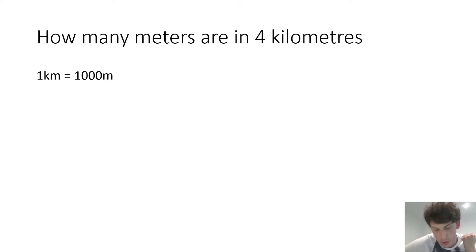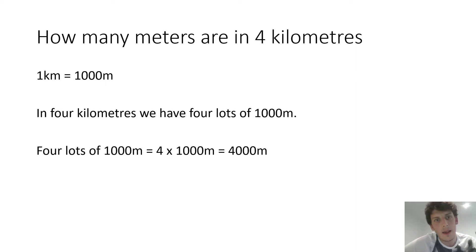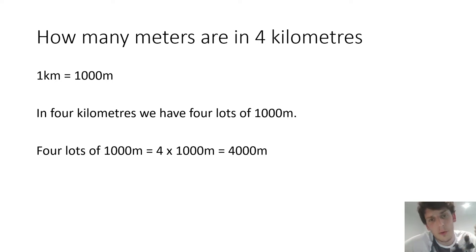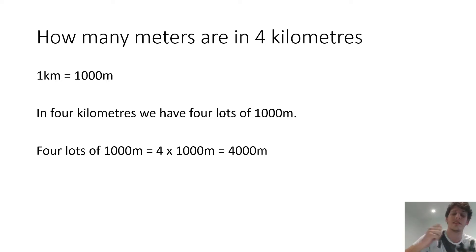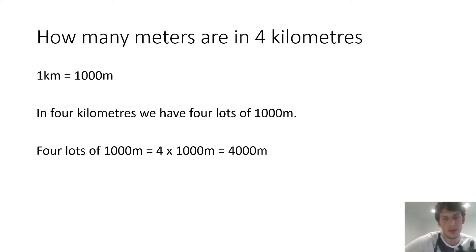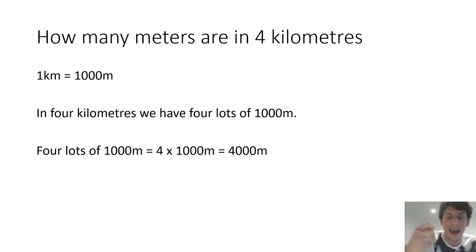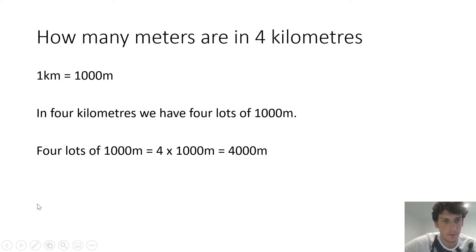One kilometer is equal to 1,000 meters. Here we've got four kilometers, which means we've got four lots of 1,000 meters. Four times 1,000 meters equals 4,000 meters. So in four kilometers, we have 4,000 meters.